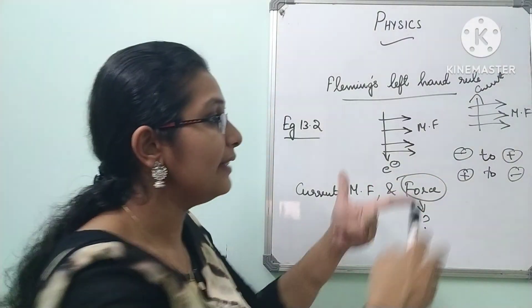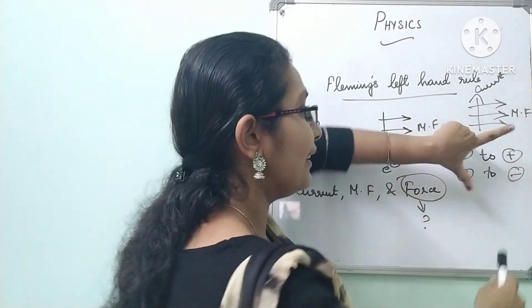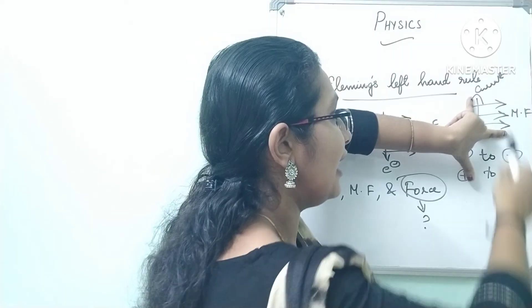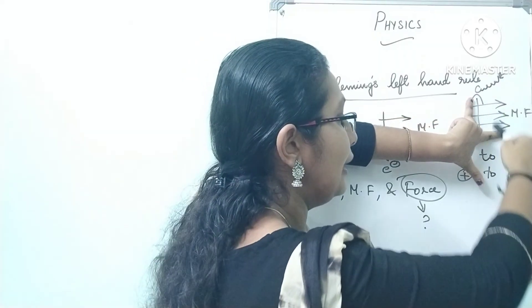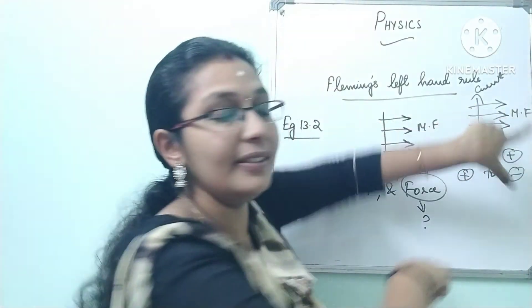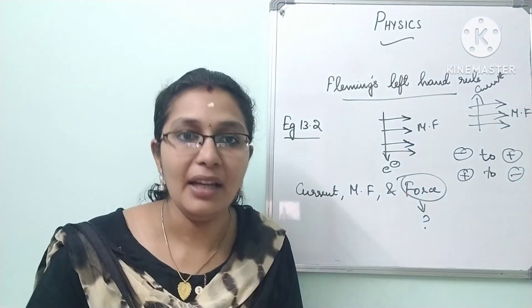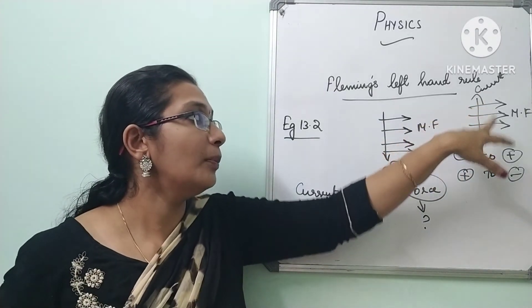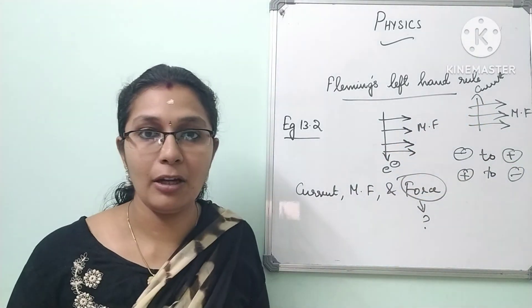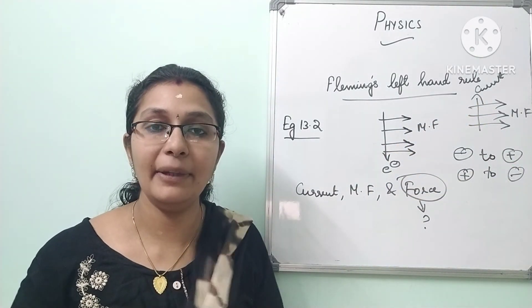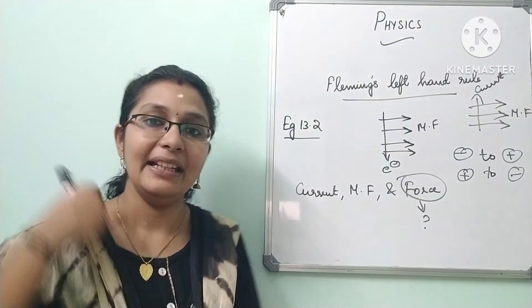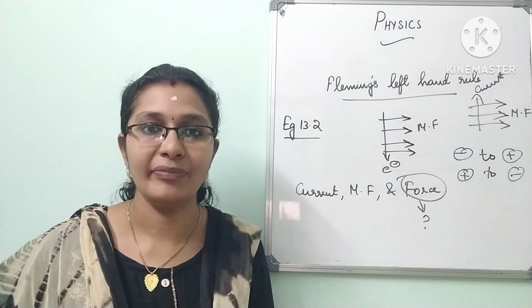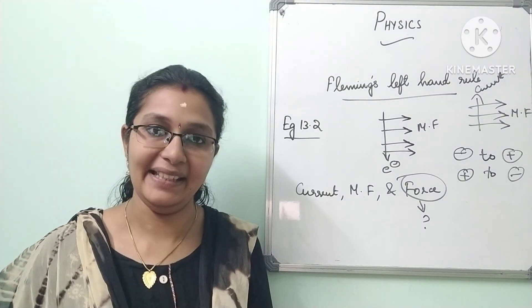Keep your hand with the magnetic field here and current direction here — the direction of force is into the page. Since I am showing it on the board it appears downwards, but when you keep your hand on your book and see, it is into the page.